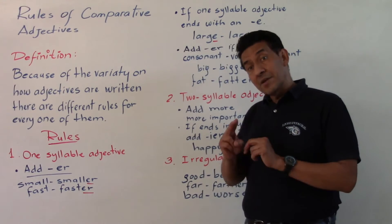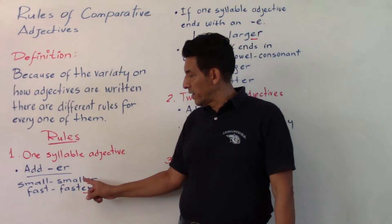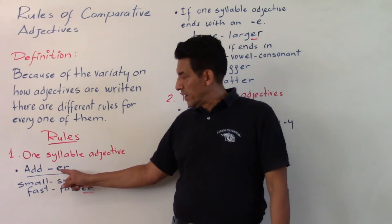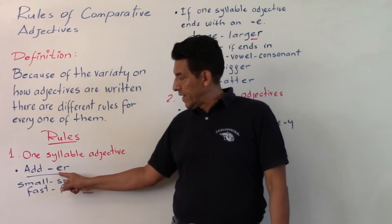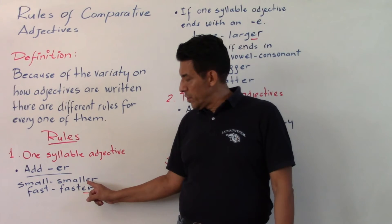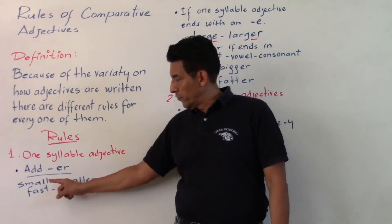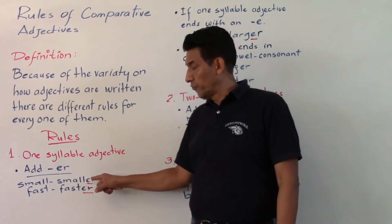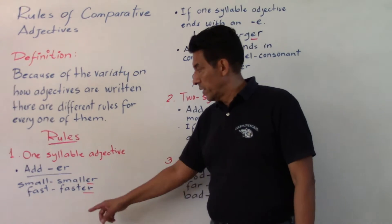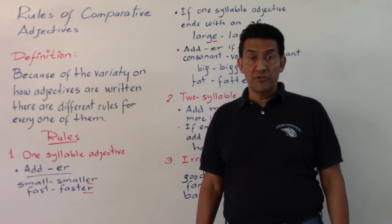So, for this type of adjective, we are going to add -ER. For example: small → smaller, fast → faster.